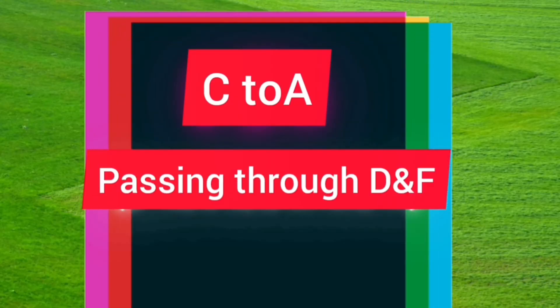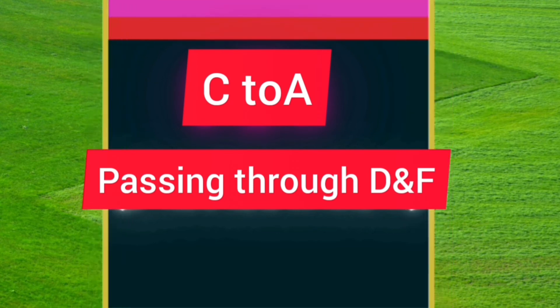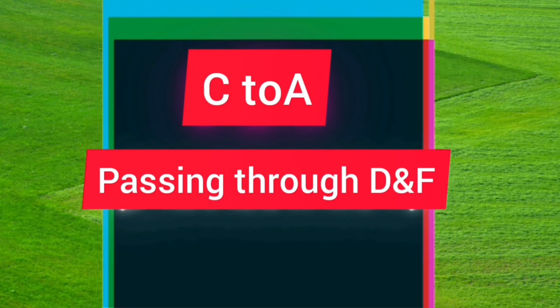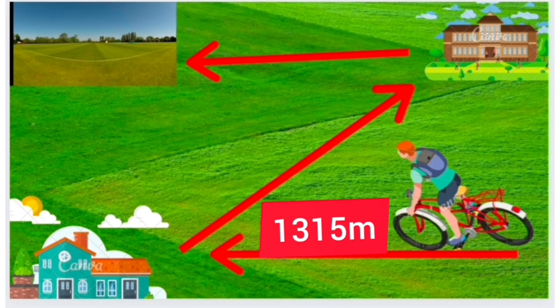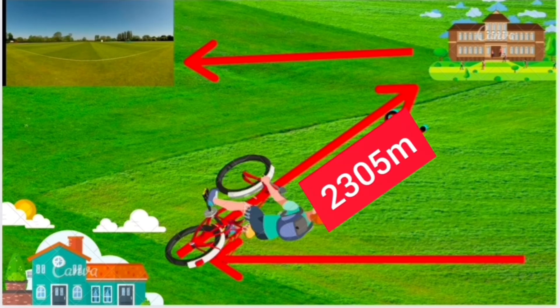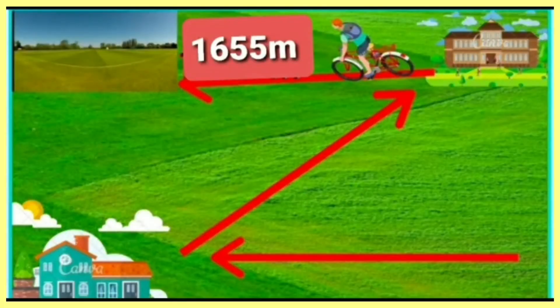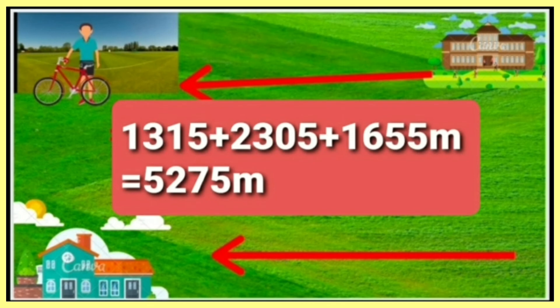Now he goes from point C to A. C is the hospital and A is the ground, passing through point D and F. D is Raju's house, distance is 1315 meters. Then to point F, that is school, whose distance is 2305 meters. The distance between school and the playground, that is point A, is 1655 meters. The total distance covered by Raju is 5275 meters.